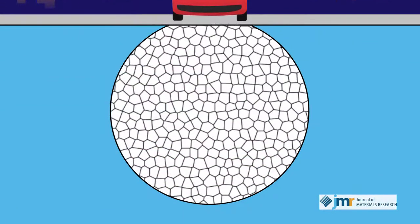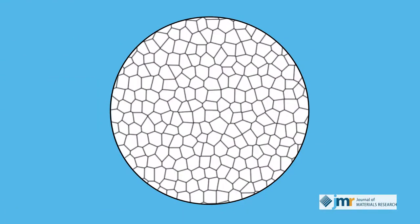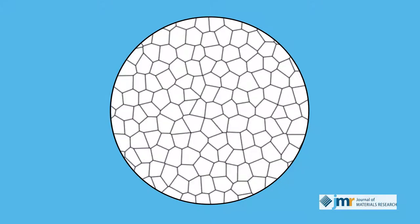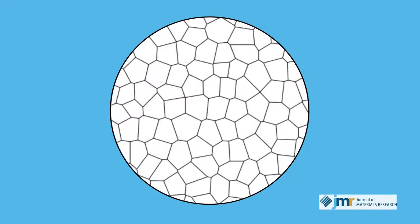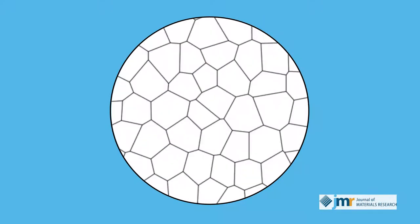But at the nanoscale, grains are notoriously fickle. Their strong tendency to grow makes it nearly impossible for researchers to chase higher levels of strength.